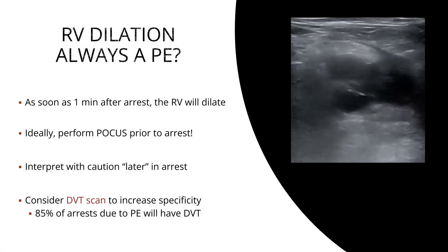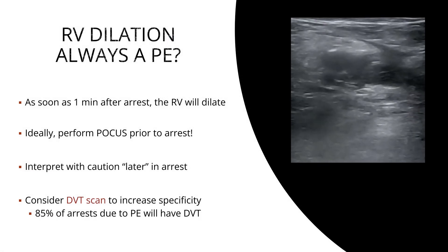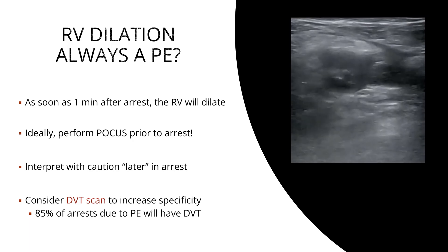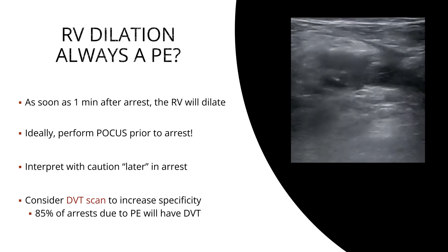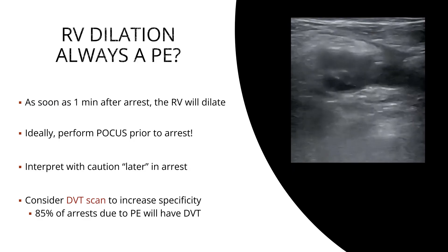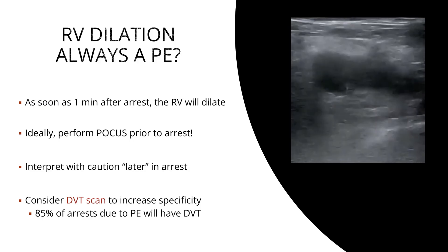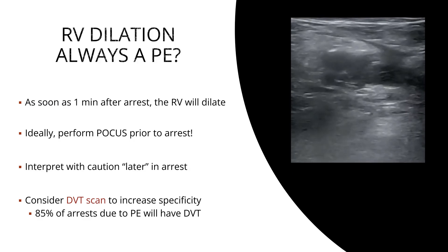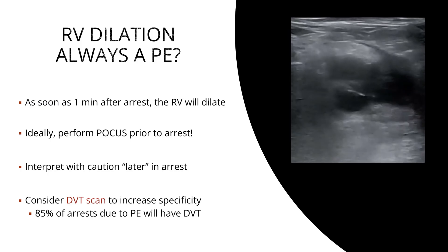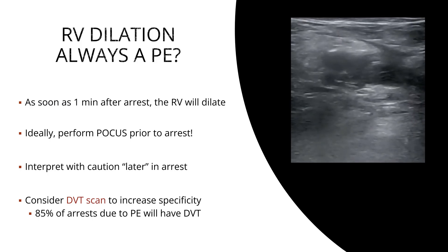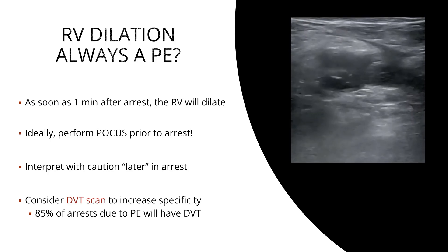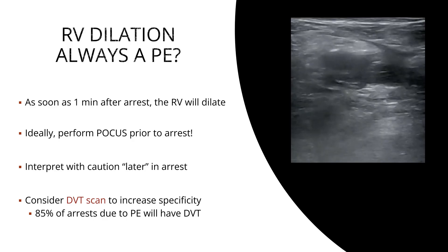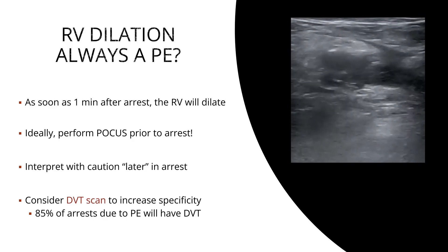People often ask: is RV dilation always a sign of acute pulmonary embolus? Well, there's a pig study from 2017 that showed that very quickly after cardiac arrest, the RV will dilate, usually from a combination of poor forward flow from the LV and venous pooling into the right heart. So ideally, you can perform your POCUS exam prior to the cardiac arrest, and you have to take a little bit of caution when you use POCUS later in the arrest. If you're unsure, you can always add a DVT scan to increase your specificity, because about 85% of arrests due to acute pulmonary embolus will also have a DVT.